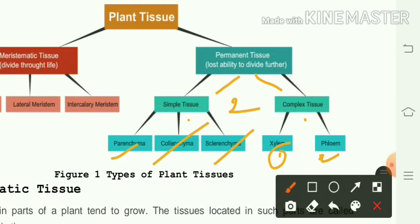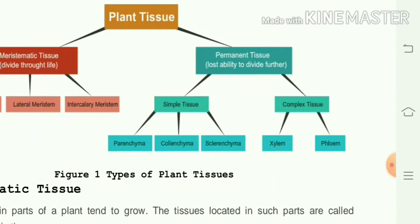To summarize, plant tissues are meristematic and permanent. Meristematic has three types: apical, lateral, and intercalary. Permanent has two types: simple and complex. Simple permanent tissues are parenchyma, chlorenchyma, and sclerenchyma. Complex tissues are divided into xylem and phloem.